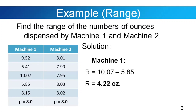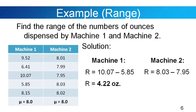For machine two, the highest value is 8.03 minus the lowest value 7.95, so the range for machine two is 0.08 ounces. Comparing the two machines, machine two performs better, as the values in machine two are not dispersed compared to machine one.